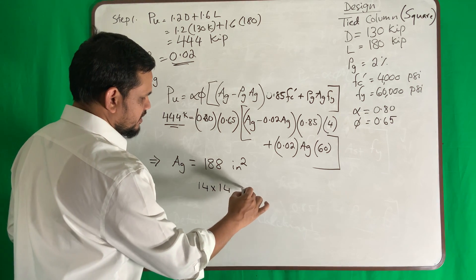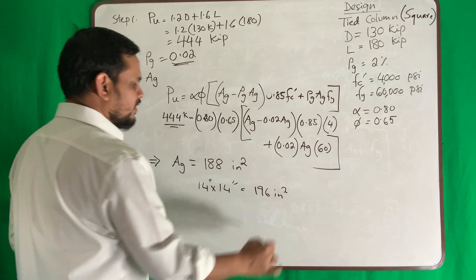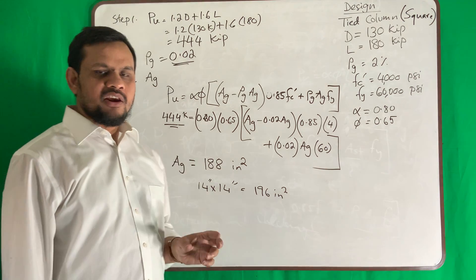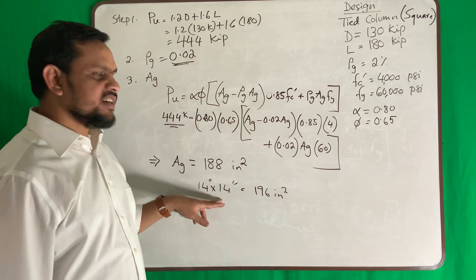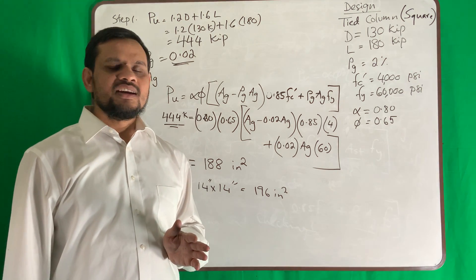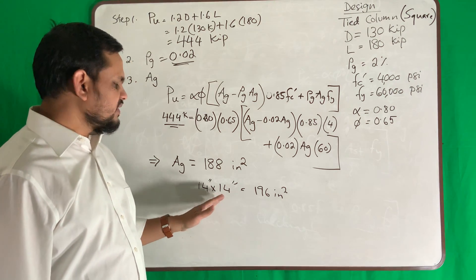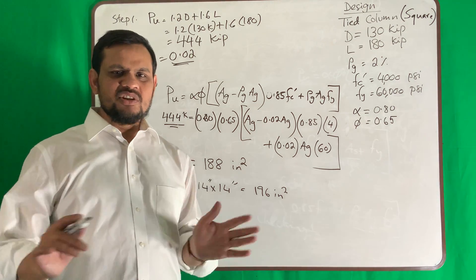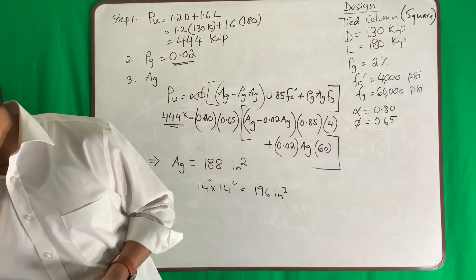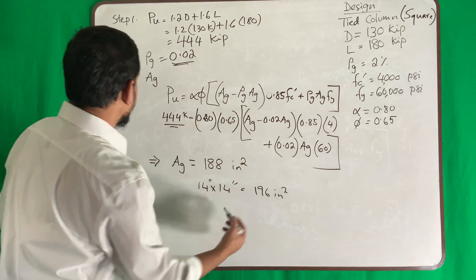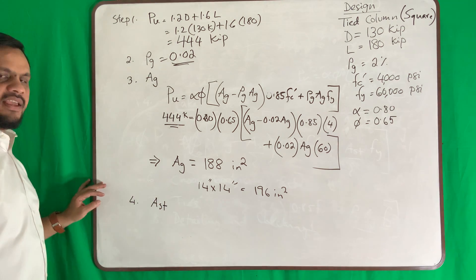Now if I use 14 inch times 14 inch, it is 196 inch square. So whatever we need we cannot provide exactly. You can provide 13.5 times 13.5, but fractions we do not like. Say 14 by 14, your book used 14 by 14.